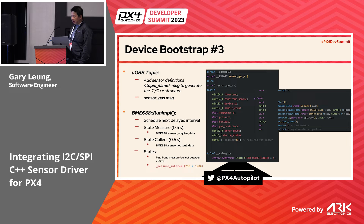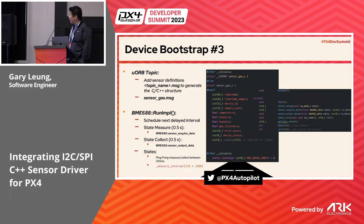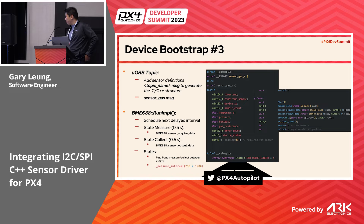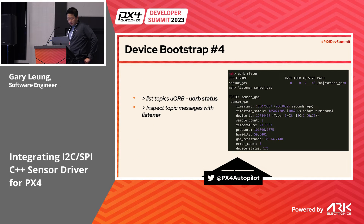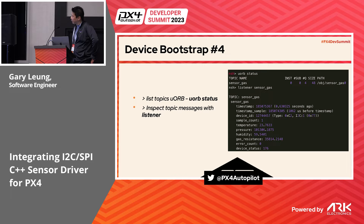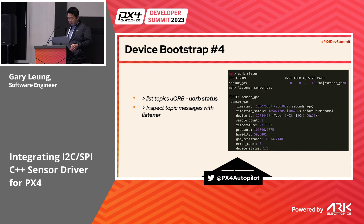I then add a message topic for uORB — in this case, sensor_gas, because it's a gas sensor device. The message definition is automatically generated as a C struct. Within the scheduler implementation, I add two states: one that polls data, and another that gets the data and publishes it at 2 Hz. Once you have a topic, you can check the status including subscribers, queue number, size, and topic path, and inspect the message data using the topic listener command.